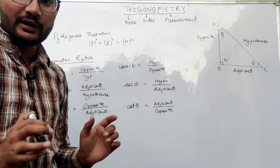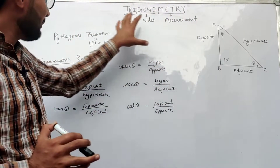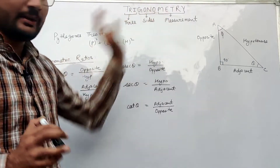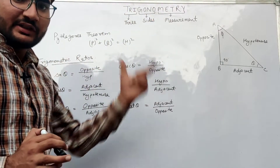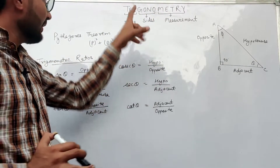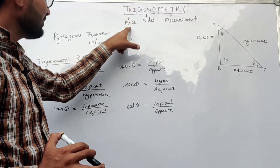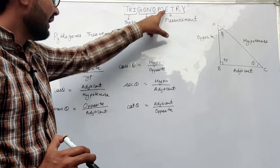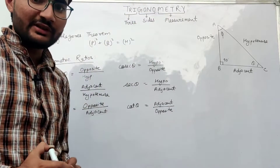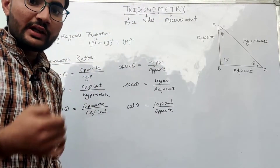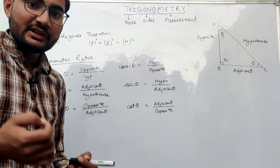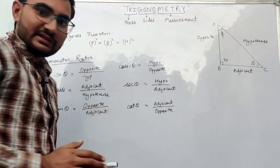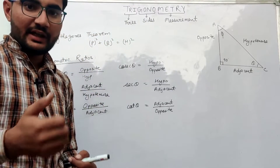Trigonometry is a Greek word which is made from three words: tri, gono, and matri — where tri means three, gono means sides, and matri means measurement. So trigonometry is basically the measurement of three sides of a triangle.